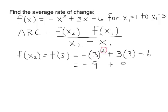Plus 3 times 3 is positive 9, and then minus 6. So the 9 and negative 9 add to 0, and that just gives us negative 6. So our f of x₂, or our function's value at x is 3, is negative 6.